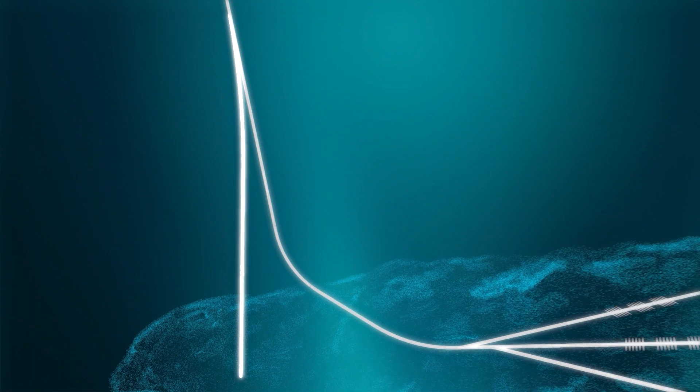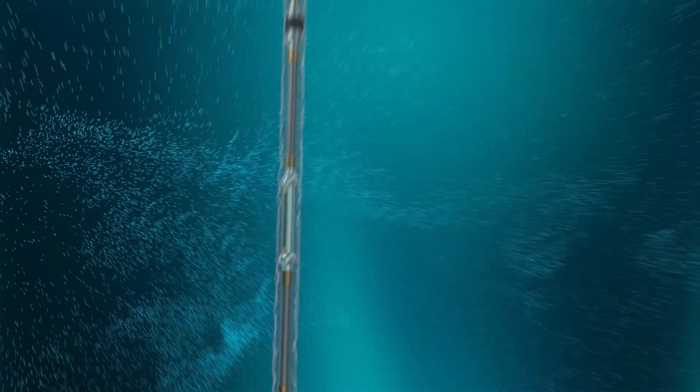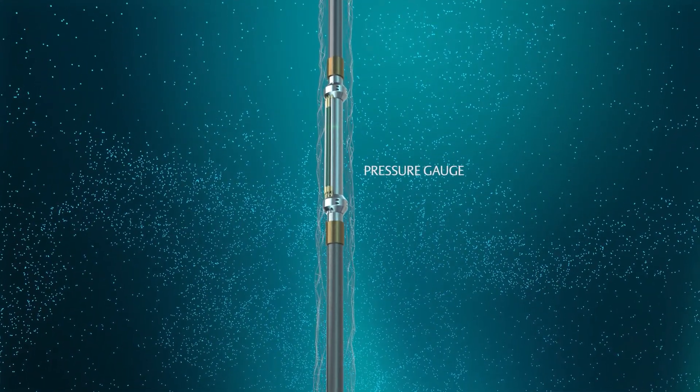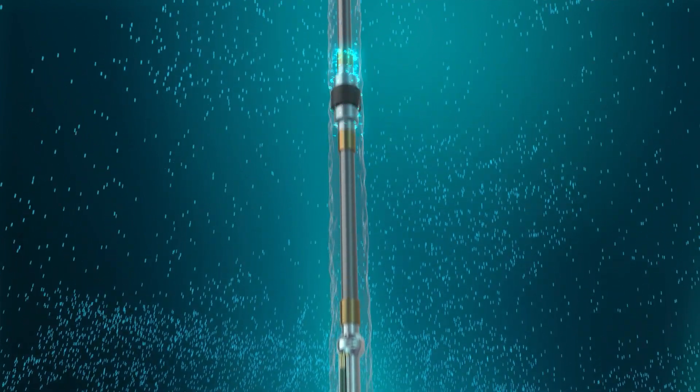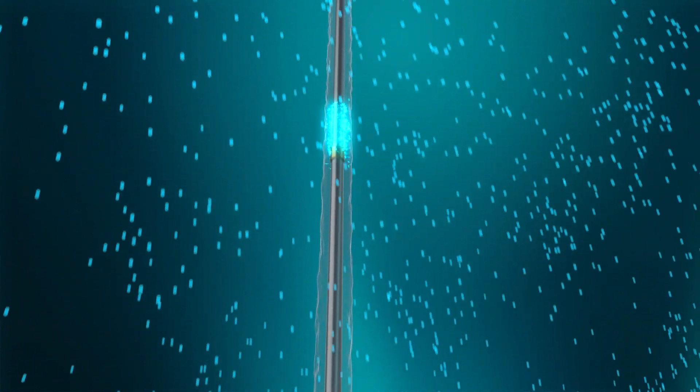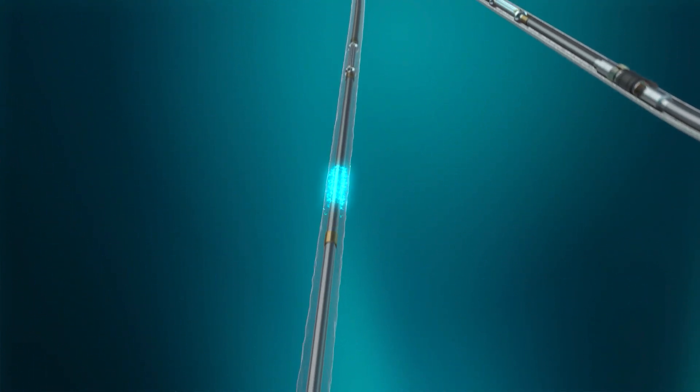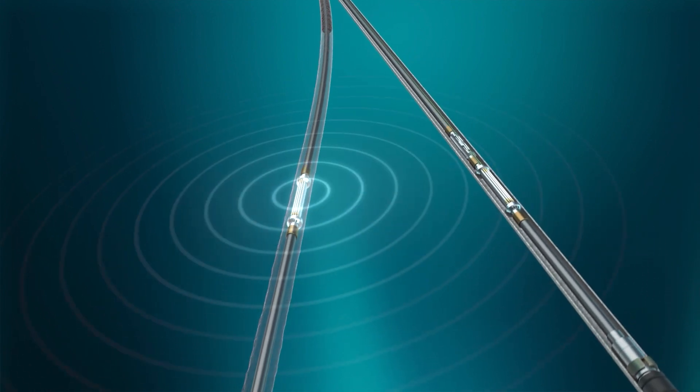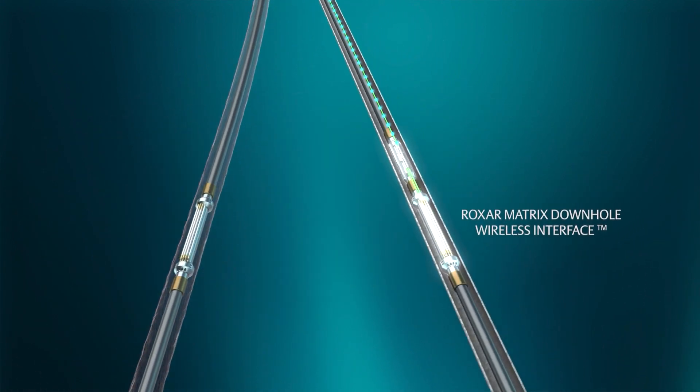With METROL wireless instruments installed in a pilot hole, the reservoir pressure can be monitored while the production well is open to flow. This data can provide information about the reservoir properties and connectivity in the area. This is useful in optimizing production rates and recovery.